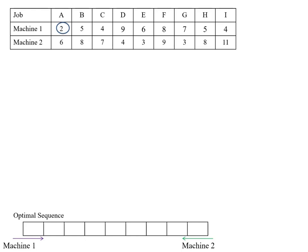Observe the number of columns in the optimal sequence table — it is equal to the number of jobs. Here we have a total of nine jobs, so the number of columns in the optimal sequence table is also nine. We fill jobs in the optimal sequence table: for machine one, from the beginning of the table, and for machine two, from the last of the table. The minimum processing time is 2 for job A on machine one, so place job A at the beginning of the table.